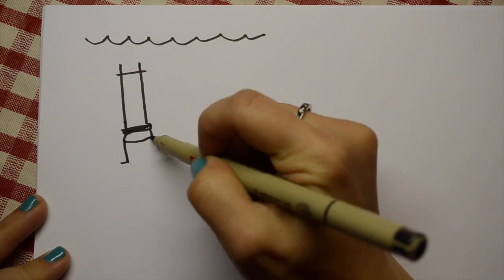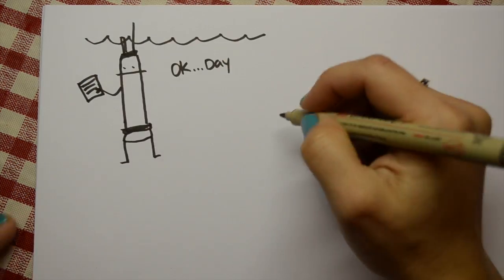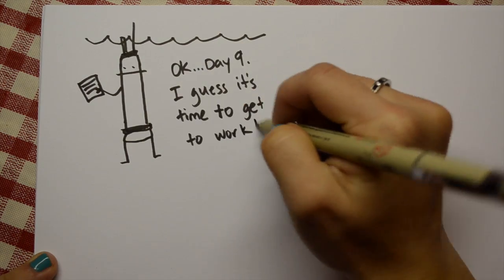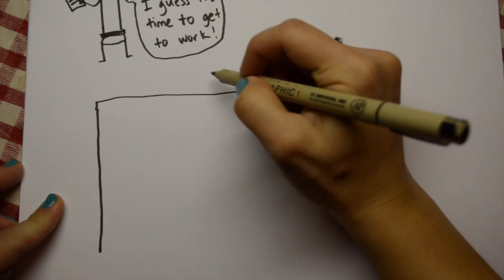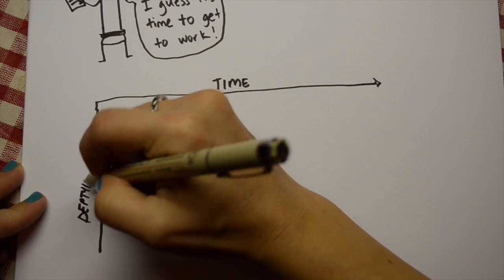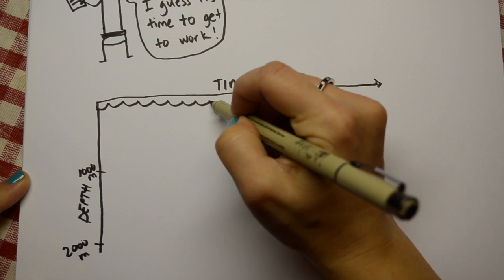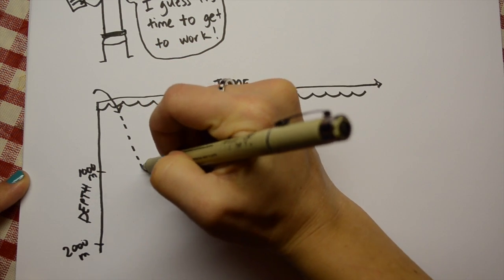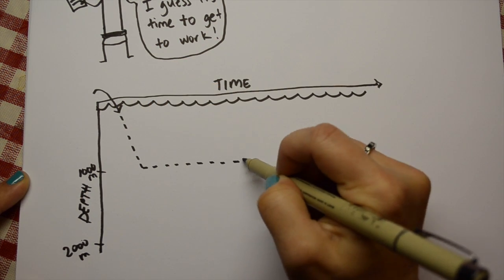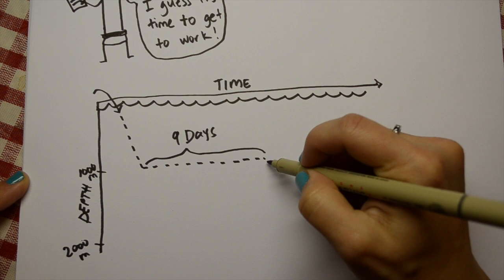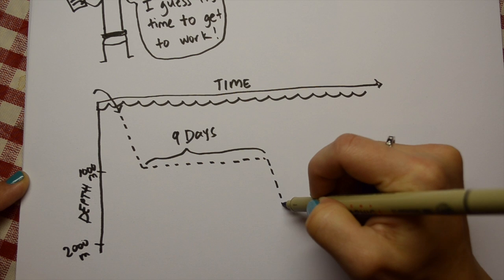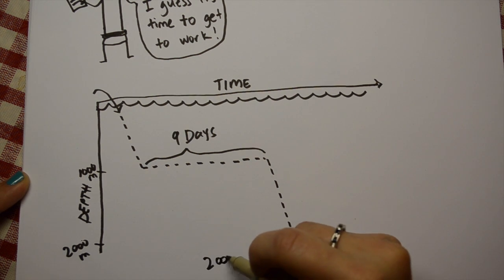Rick explained to me that each float is programmed with instructions telling it where to go. A typical Argo float is programmed with a 10-day cycle that repeats over and over. The first thing the Argo float does is drop down in the water column to a depth of 1000 meters. It chills out there, just drifting, for about 9 days. Then it's time to get to work.